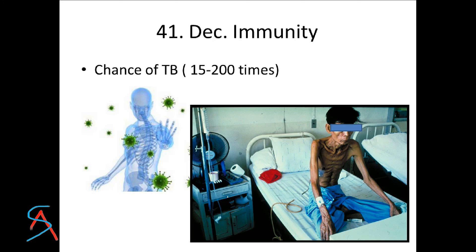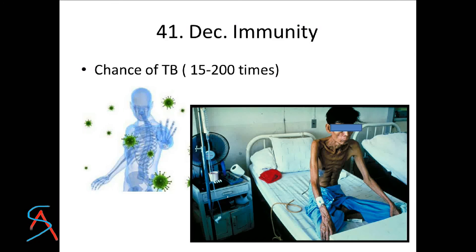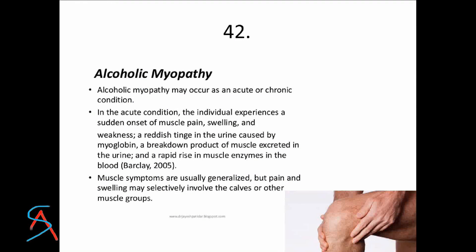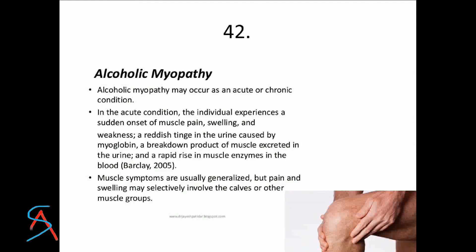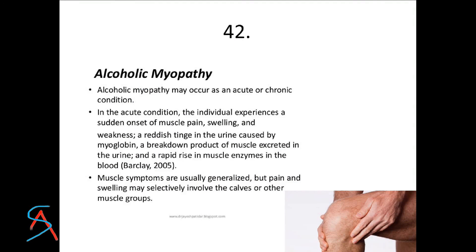Alcohol also causes decreased immunity — the ability of your body to counter infection. With reduced immunity, the chance of getting tuberculosis (TB) is approximately 15 to 200 times higher. Alcoholic myopathy causes pain in the muscles.